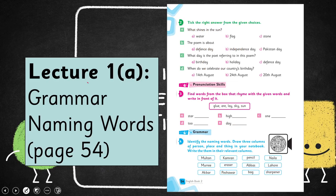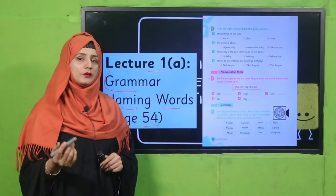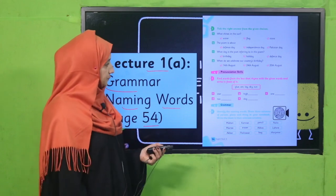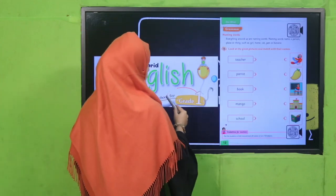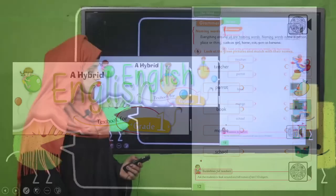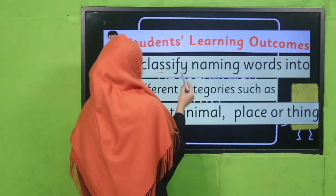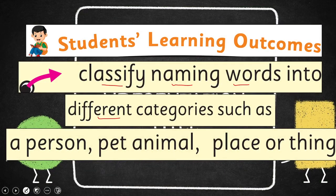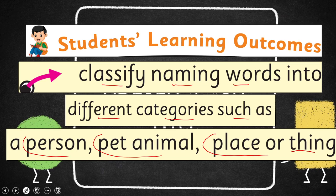Today's lecture is Lecture Number 1A under the title of Grammar. We will learn about naming words — what are naming words and how we use them in our speech and writing. In English for Grade 1, you have already learned about naming words. I hope you remember it. Today we are going to learn further — how to classify naming words into different categories such as a person, pet, animal, place, or thing.